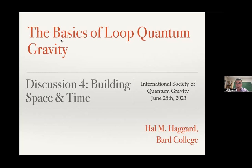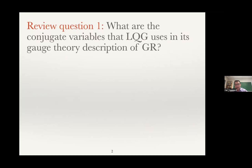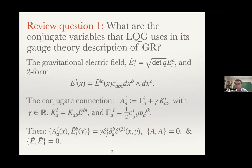I'll do the same thing I did last time and begin with two review questions. Since there's a recording, I won't give a long pause for answering. To bring your heads back to last week: what are the conjugate variables that loop quantum gravity uses in its gauge theory description of general relativity? We were just discussing this, and the answer is that we use the Ashtekar variables — the electric field, which is a two-form on the spatial slice of spacetime.